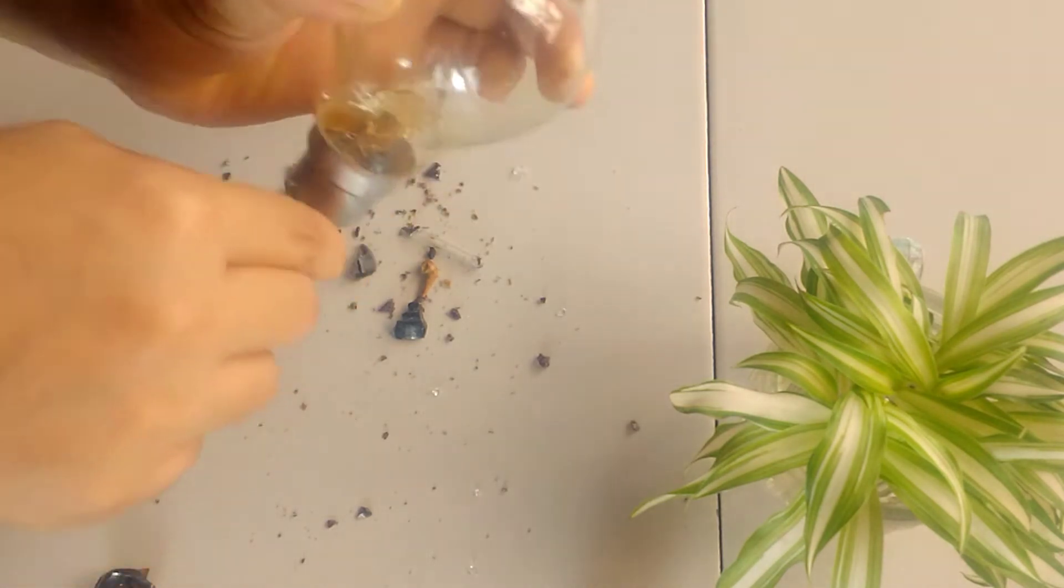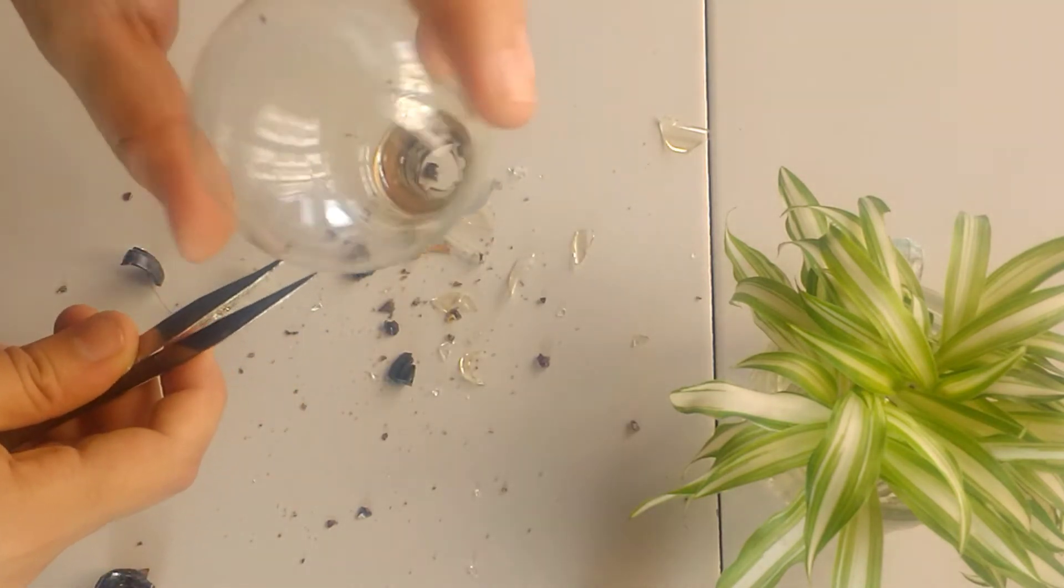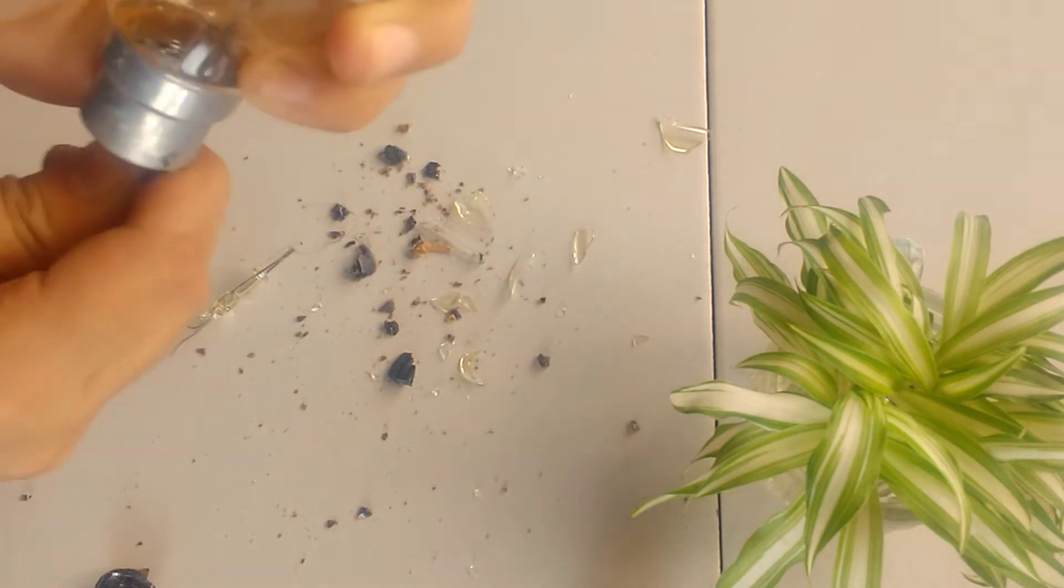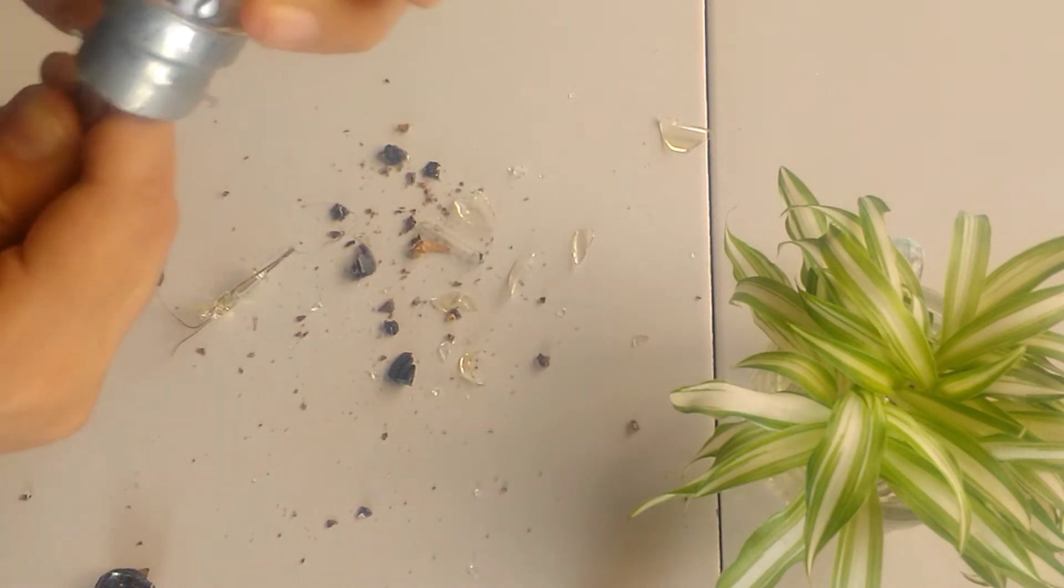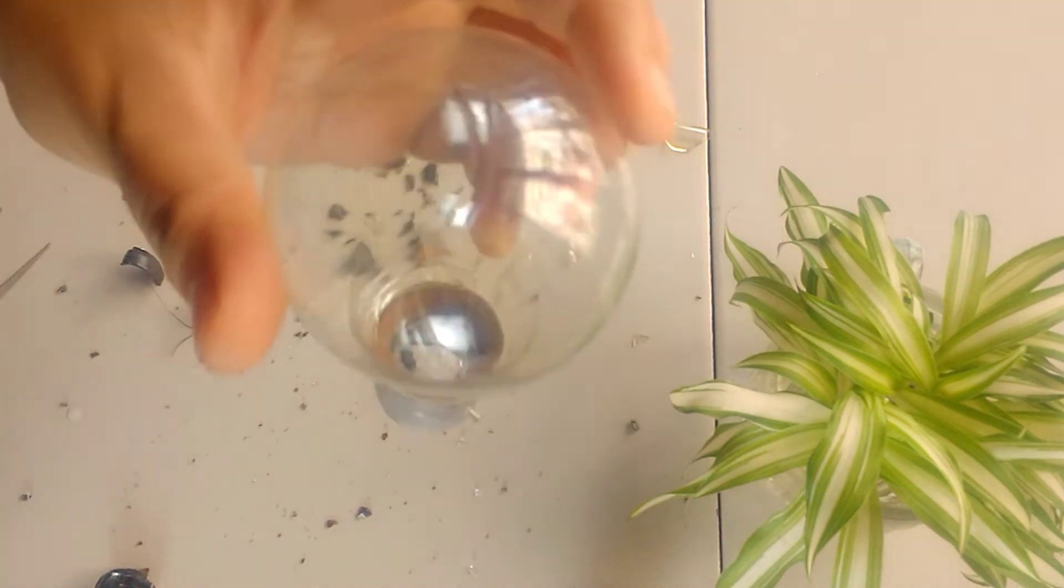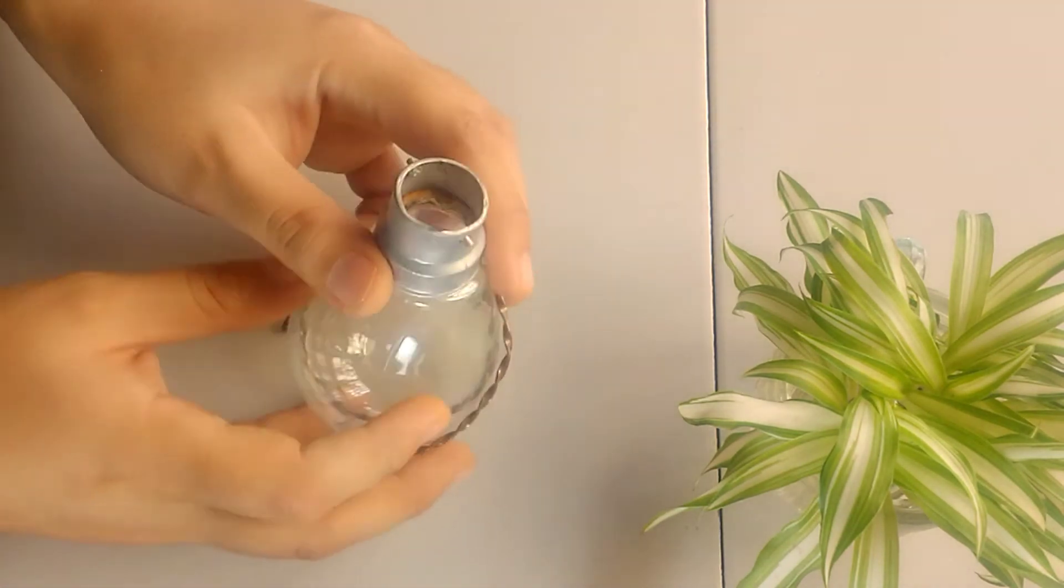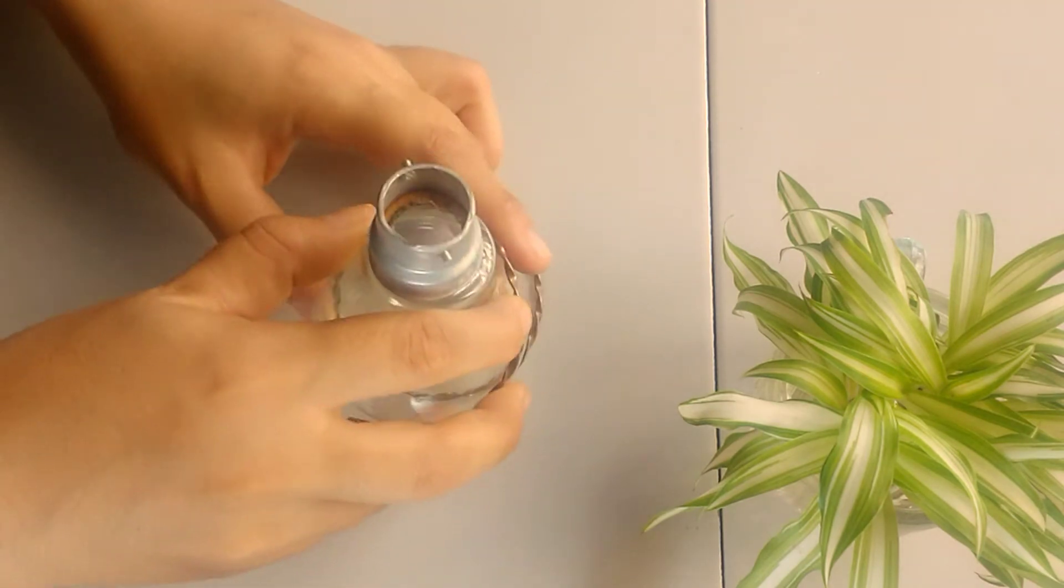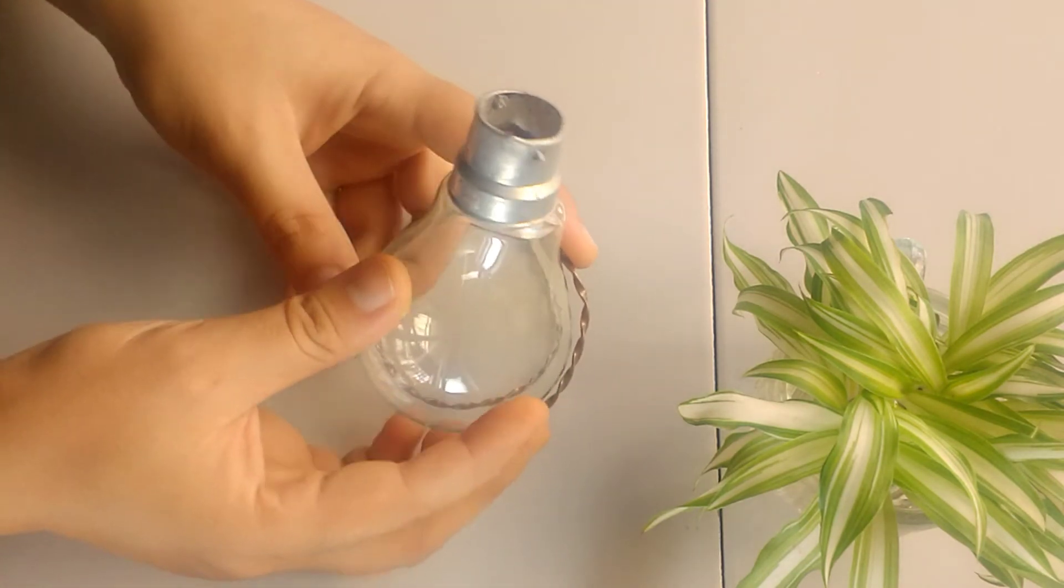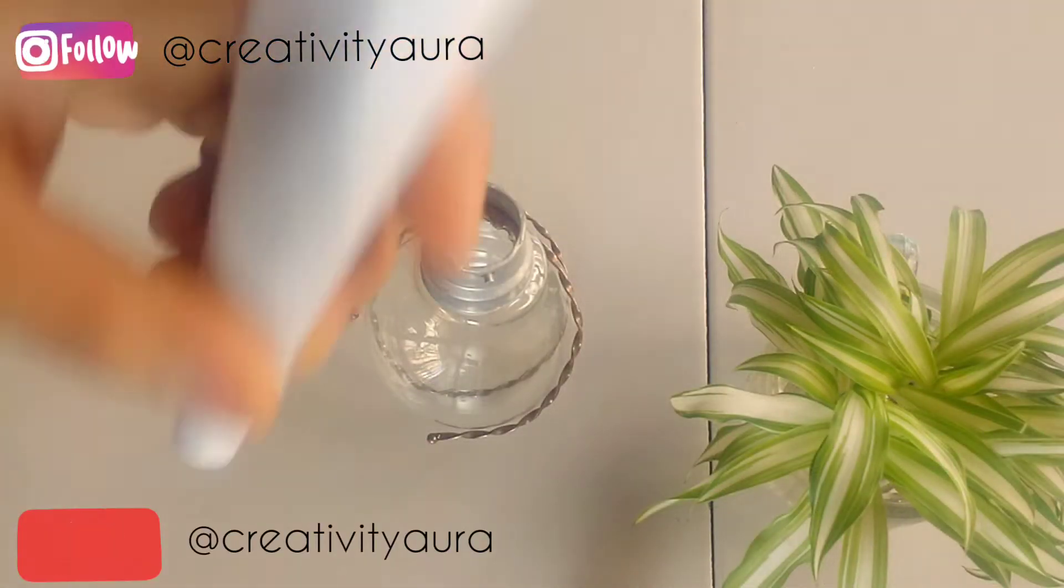You can also use a tweezer to clear out the insides. You can see it's all clean now. Firstly, we will fix the light bulb on the stand and do the further process. I think this will be good enough. Now, using paper like this...